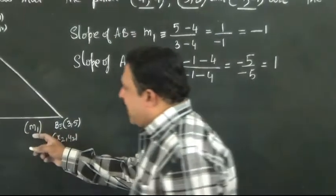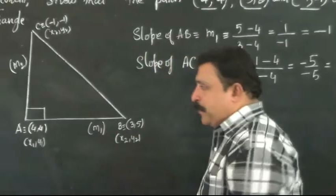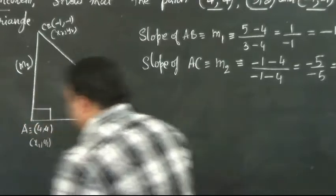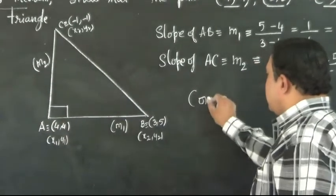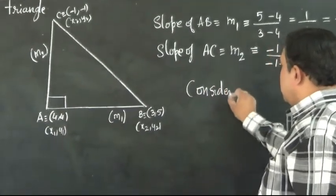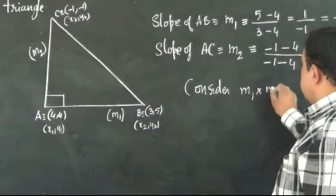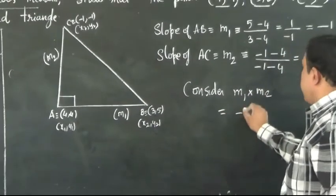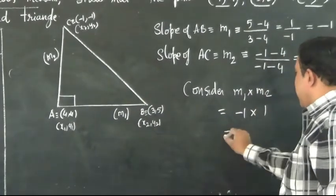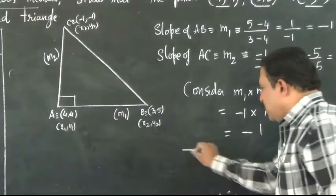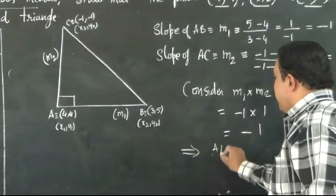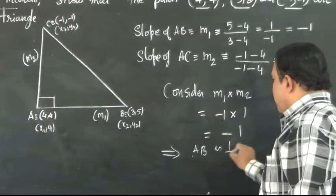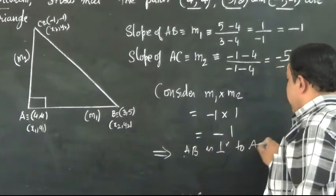We got slope of m1 and slope of m2. Now let's check the product of these slopes. Consider m1 into m2. m1 is minus 1, m2 is 1. Clearly it is equal to minus 1. This implies that AB is perpendicular to AC.